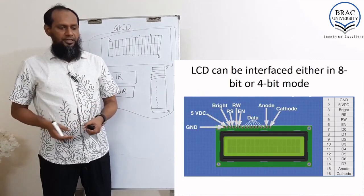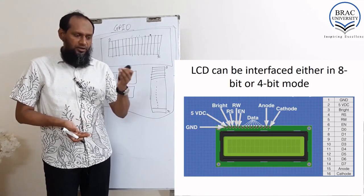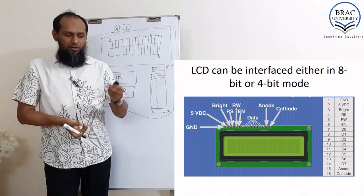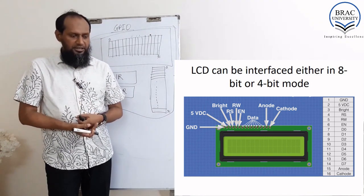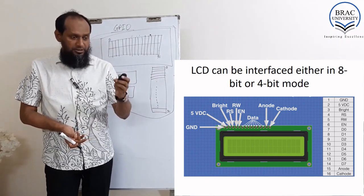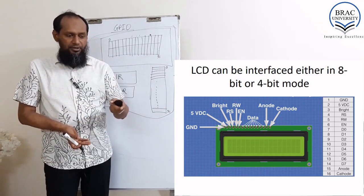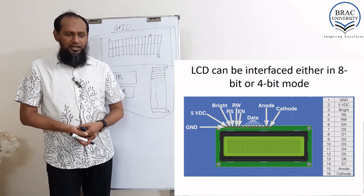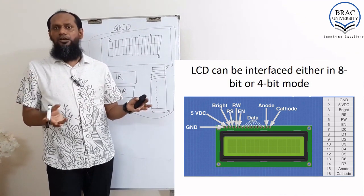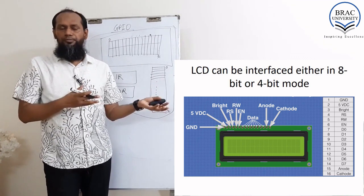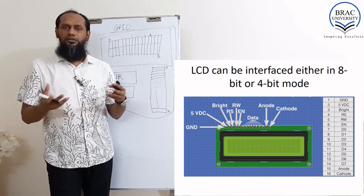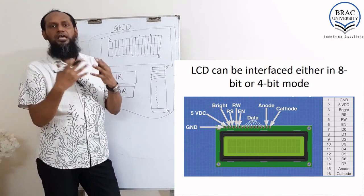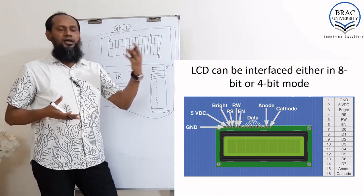Now you can see the pin configuration. The first pin is ground, the second is 5-volt VCC. Then there is brightness — you usually use a potentiometer to control the brightness. Then register select, then read/write, then enable. Then 8 bits for data, and then anode and cathode. Here is the pin configuration with the microcontroller unit. In this session, we are not going to discuss programming — that is part of the lab, where they will show you how to program this LCD.